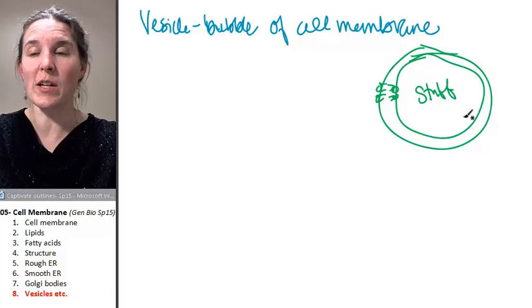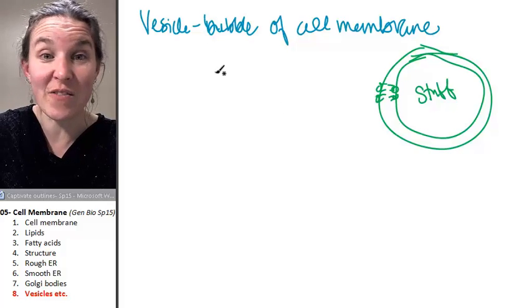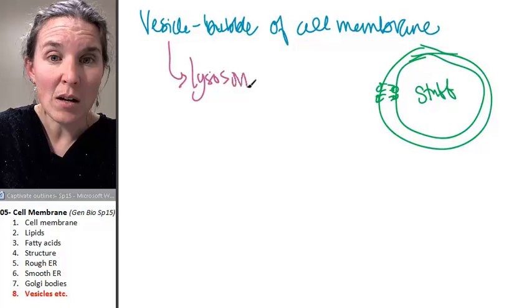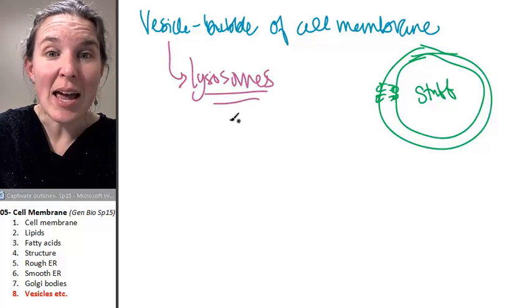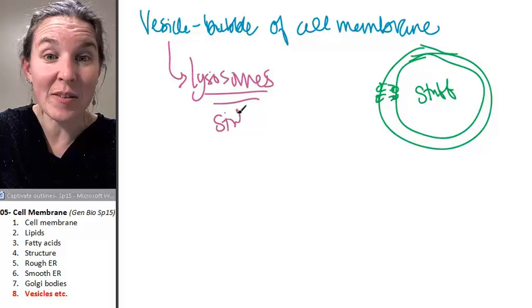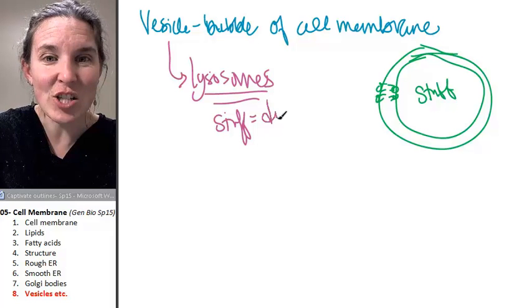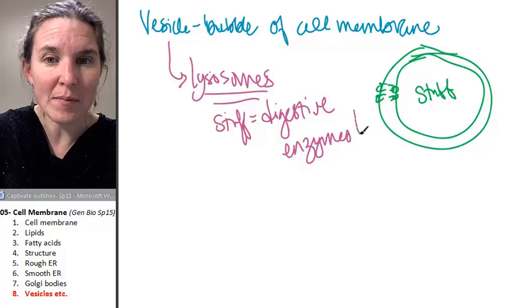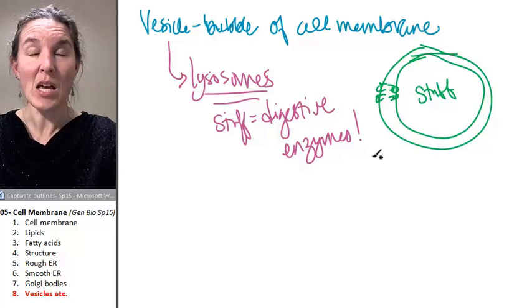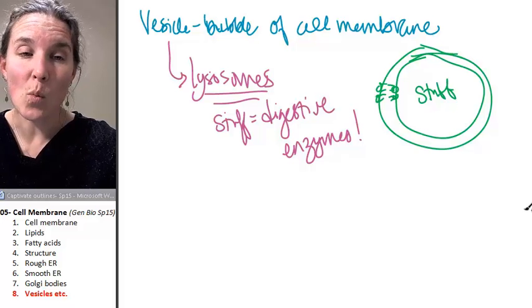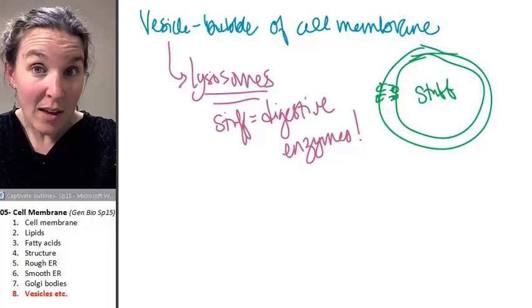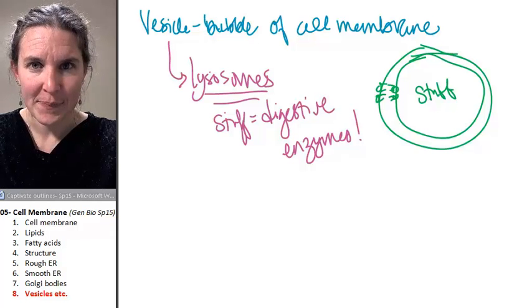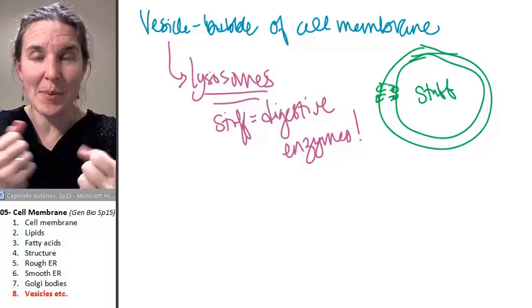We can do multiple things with that. We have specialized vesicles called lysosomes. In lysosomes, the stuff is digestive enzymes. So a lysosome would fuse with something that it wanted to digest and destroy. And then whatever it was digesting and destroying, it would break it up. It's like Legos.